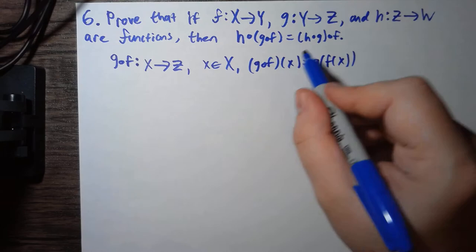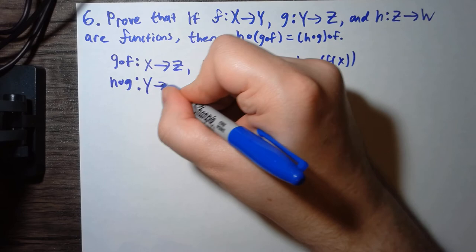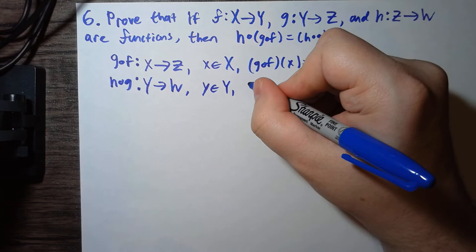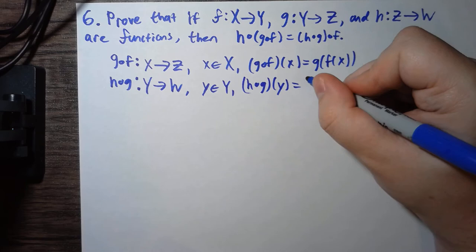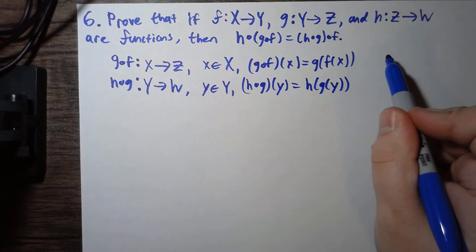This is going to be a function from Y to W. And given some little y in Y, we're going to have h∘g of y is equal to h(g(y)).